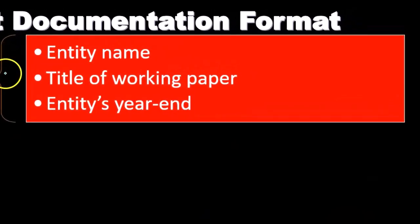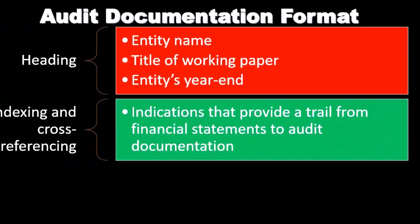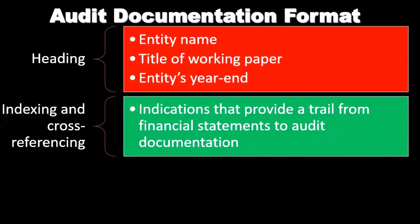The working paper should include the entity name and the title of the working paper, which gives us an idea of what the working paper is trying to do or what evidence it's providing. We also want to know what year end this working paper is applied to.